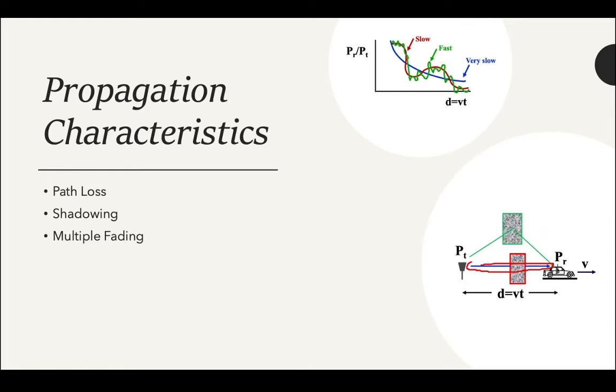The last characteristic is multiple fading. Multipath fading is the signal received by the receiver from multiple different paths of reflection. This characteristic is represented by the green line in the figure and also in the graph. As you can see, the green line is reflected by an object and received by the car. In the graph, the line fluctuates much more often and the ratio is inconsistently decreasing when compared to the red line. This means that multiple fading makes the propagation somewhat unpredictable to model.